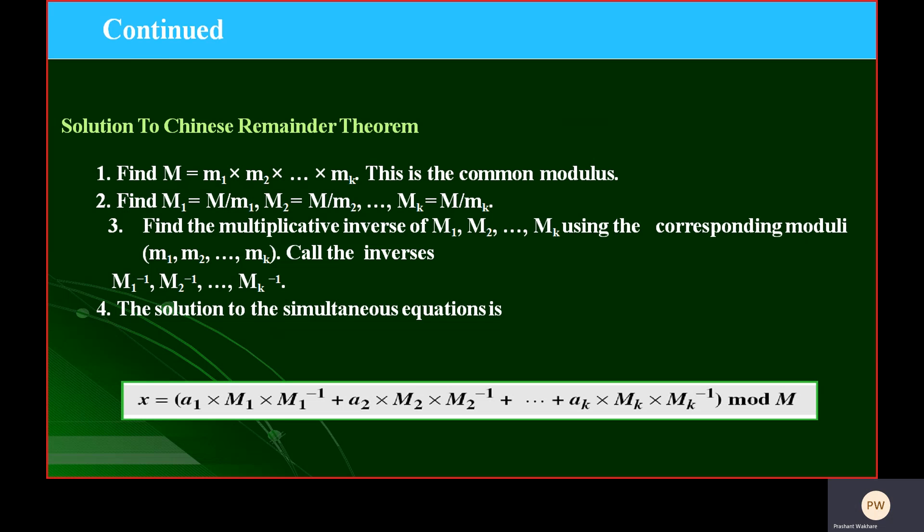See, there is the Chinese Remainder Theorem formula: X equals A1 multiplied by M1 multiplied by M1 inverse, plus A2 multiplied by M2 multiplied by M2 inverse, up to AK multiplied by MK multiplied by MK inverse, mod M. This is the formula of the Chinese Remainder Theorem.